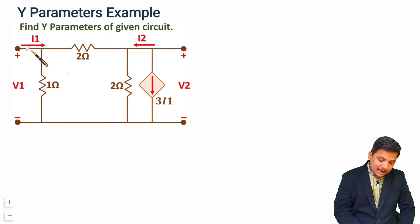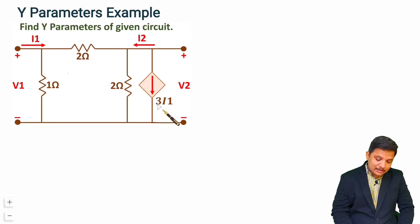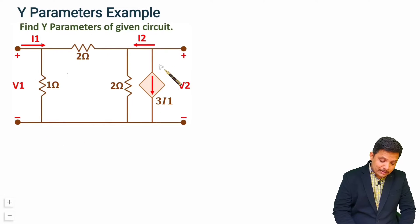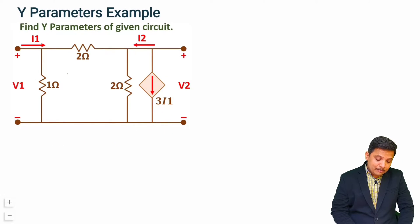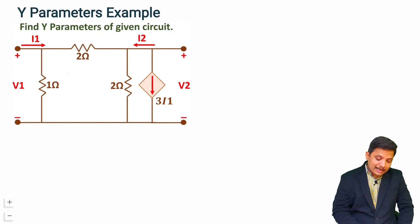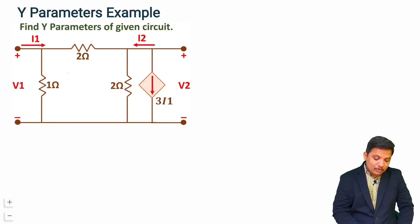We have current I1 and voltage V1, voltage V2 and current I2, and a dependent current source 3I1. Now, you will have to see the network first. If it is simply a pi network or T network then we can directly write voltage and current equations and get Y parameters directly. But this is not a simple pi or T network, so we have to do the basic process of calculating Y parameters.